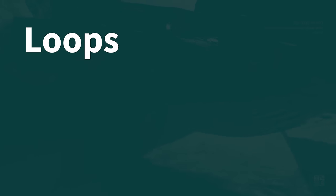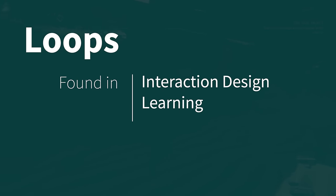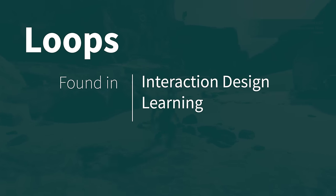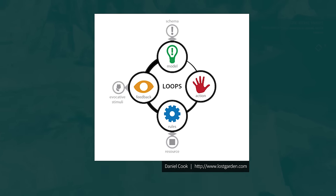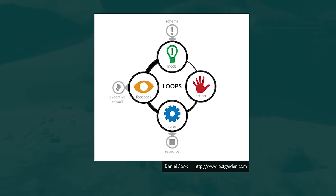Loops are a concept that can be found in the interaction design and learning fields. When the brain is interacting with something, there is a process that it goes through in order to adapt to its surroundings. There are several different versions of this loop, so we will be using the one proposed by Daniel Cook of Spry Fox. The process looks like this.